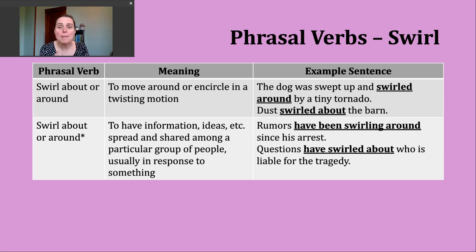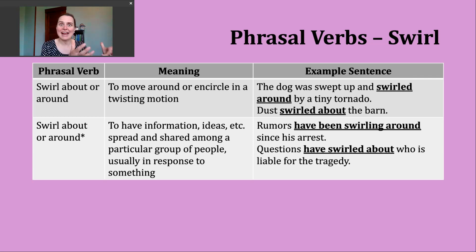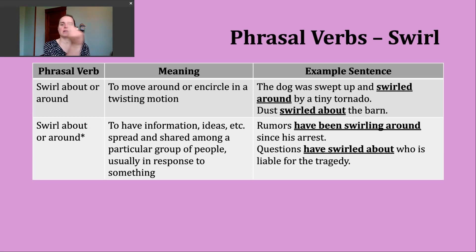The dog was swept up and swirled around by a tiny tornado — that was actually a recent headline in one publication. We can imagine this storm encircling and lifting the dog up into the air. A second example: dust swirled about the barn. Here's that example from literature, creating a mental picture of dust moving in a circular, twisting motion.